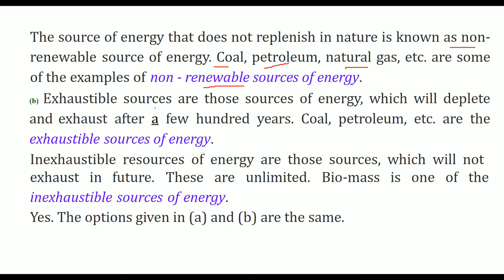Exhaustible sources are those that will deplete or exhaust after a few hundred years — coal and petroleum are exhaustible sources. Inexhaustible sources will not exhaust in the future; they are unlimited. Biomass is one example of an inexhaustible source of energy. So we conclude that exhaustible/inexhaustible and renewable/non-renewable are the same classification.